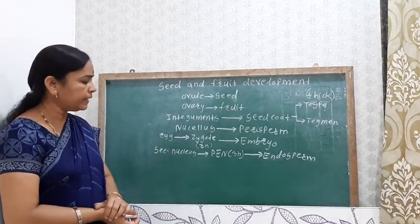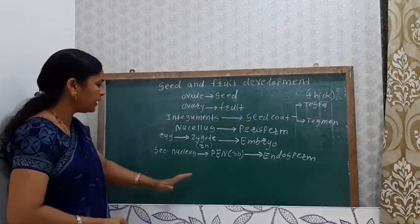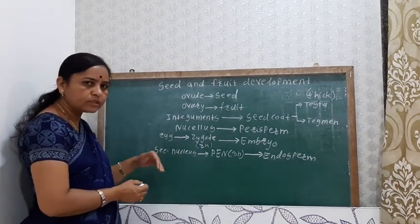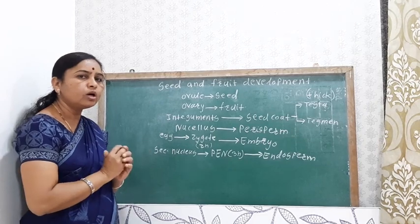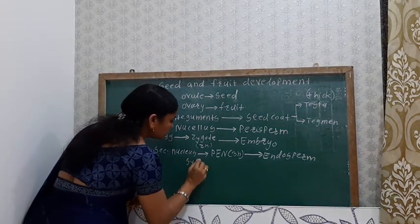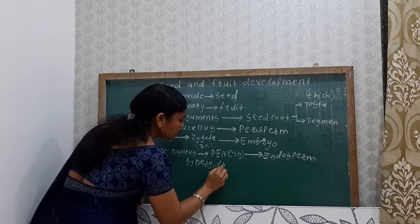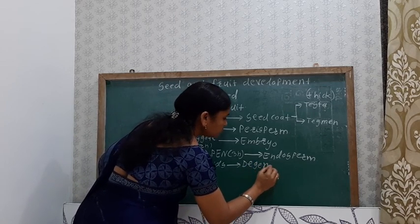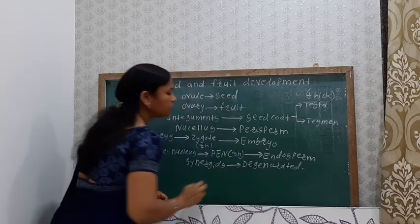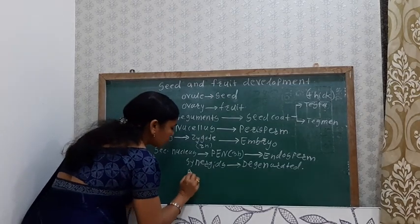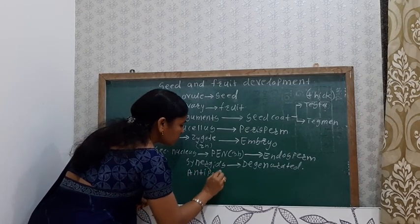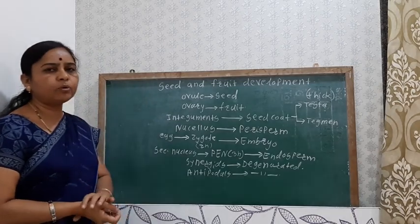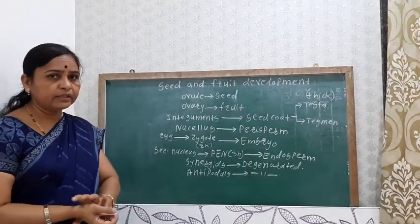In the embryo sac, the egg cell is oriented towards the micropyle end, and there are two synergids present around it. After fertilization, the synergids get degenerated. Antipodal cells are also present in the embryo sac, and these antipodal cells also get degenerated after fertilization.